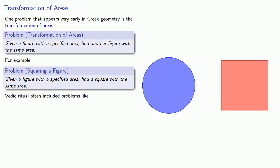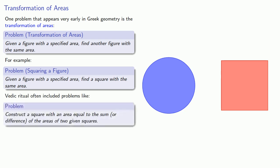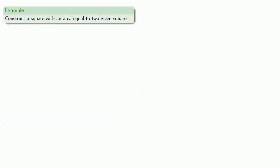But, Vedic ritual often includes problems like, construct a square with an area equal to the sum or difference of the areas of two given squares. So, it's possible that these transformation of area problems that we see in Greek geometry may have been inspired by Vedic rituals. Let's consider one of those problems.